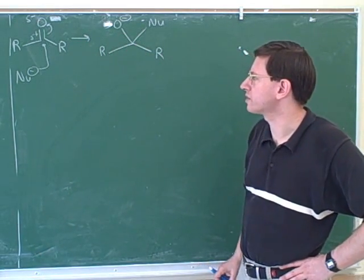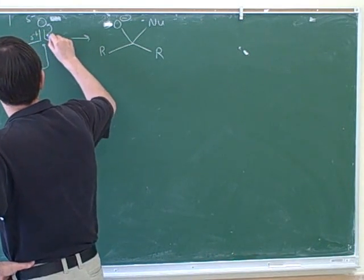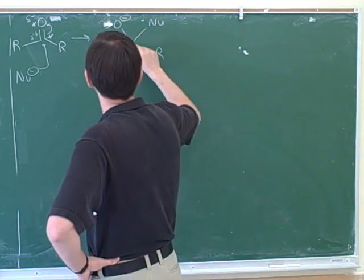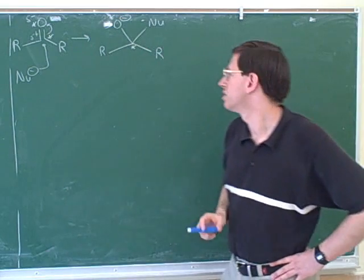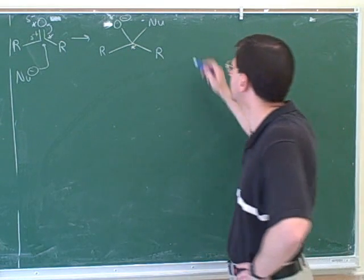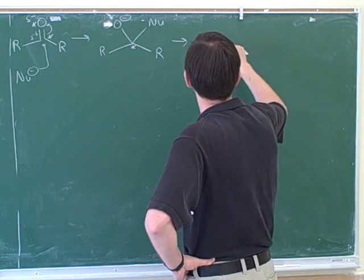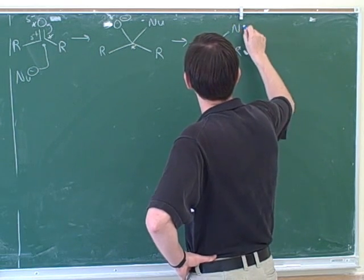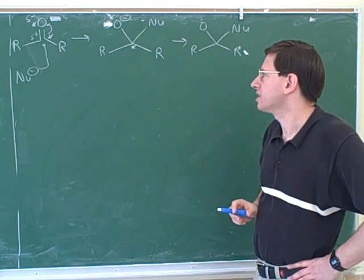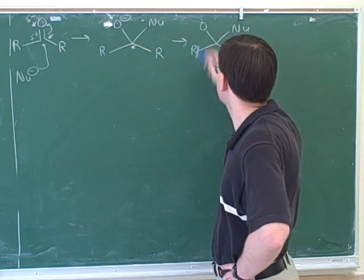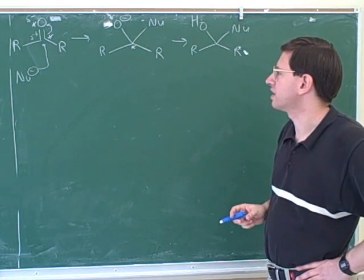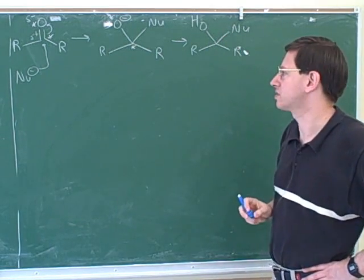One thing that's very helpful when we're working with carbonyls is to keep asterisking the carbon that used to be the carbonyl carbon, and the oxygen that used to be the carbonyl oxygen, even after they're not part of a carbonyl anymore. So I'm going to keep putting in these asterisks. After the main reaction, if there's still a charge, oftentimes you're going to protonate — so we're going to end up protonating this oxygen here.